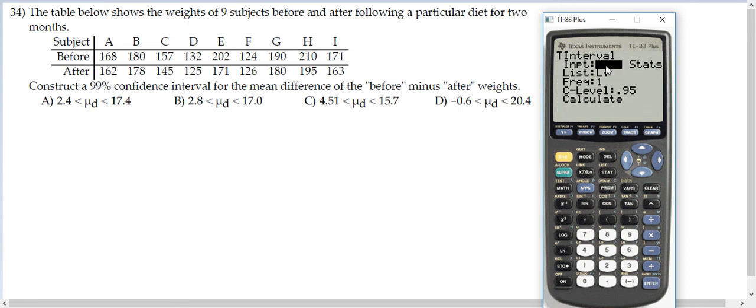We have our data in list three. We always have to change this to the third list and leave frequency at one. Confidence level for this question is 99%.